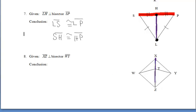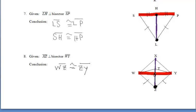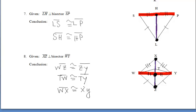Last but not least, we have our perpendicular bisector XZ bisecting segment WY. Since that segment isn't drawn, we have to construct it first. Z is a point that lies on the perpendicular bisector, so it's equidistant from W and Y, meaning WZ is congruent to ZY. T also lies on the perpendicular bisector, so TW is congruent to TY. Finally, point X lies on the perpendicular bisector, making segments WX and XY congruent.